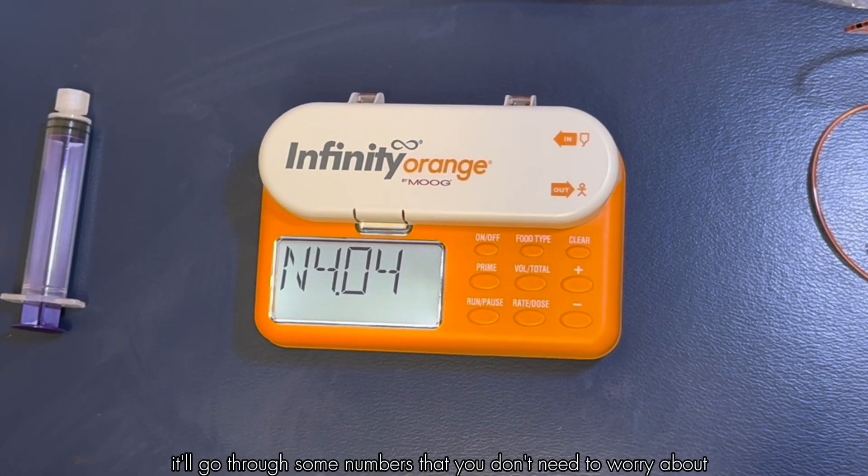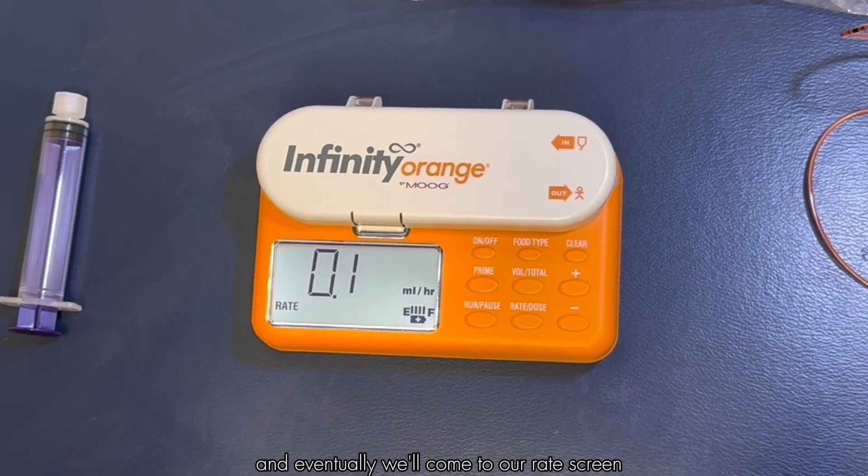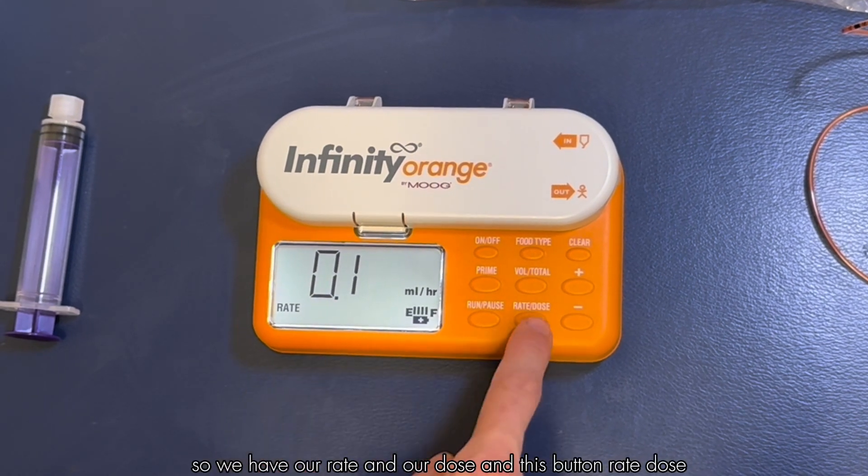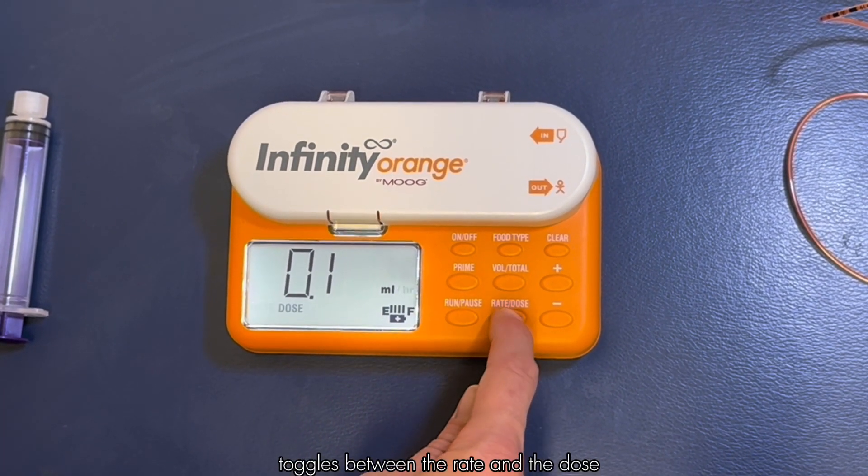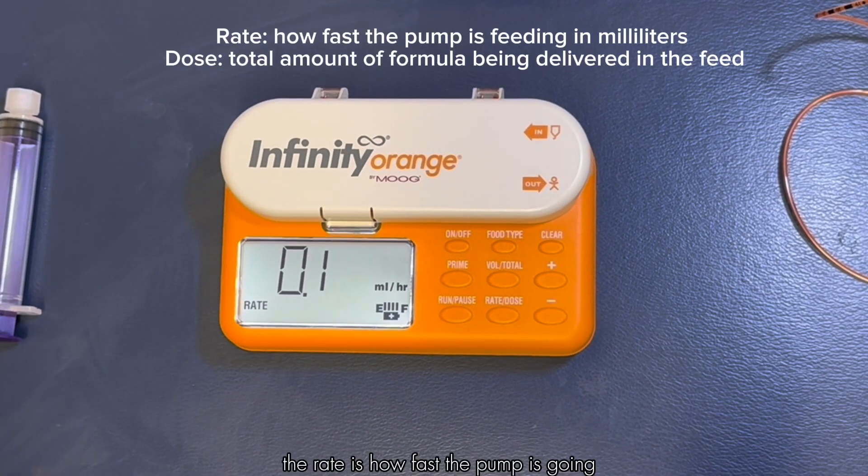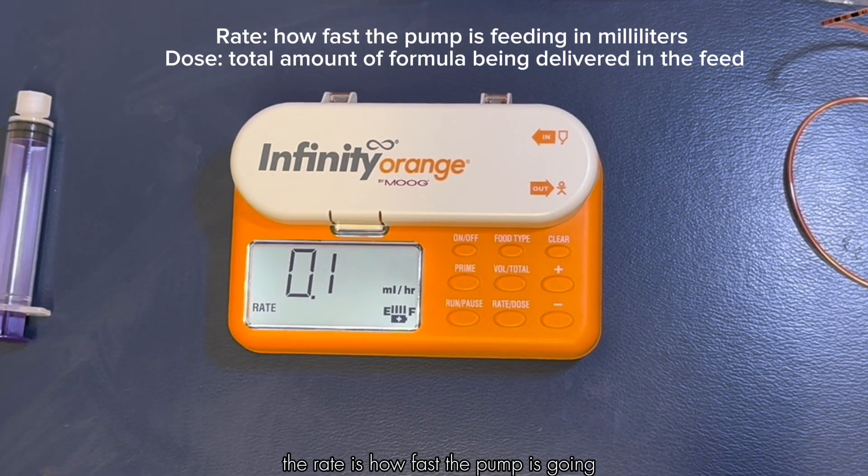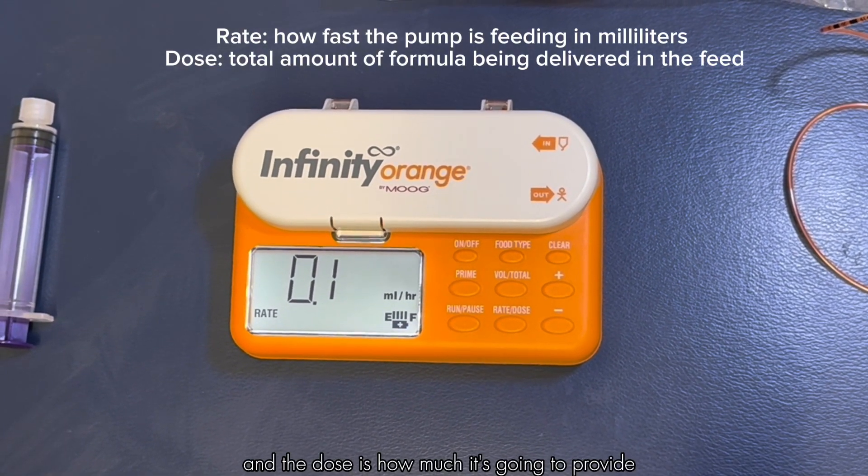It'll go through some numbers that you don't need to worry about and eventually we'll come to our rate screen. We have our rate and our dose, and this button toggles between the rate and the dose. The rate is how fast the pump is going and the dose is how much it's going to provide.